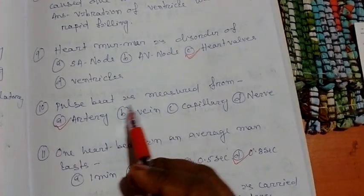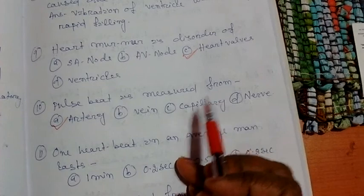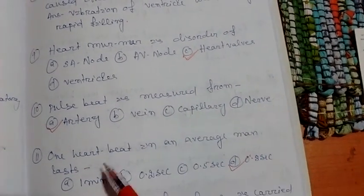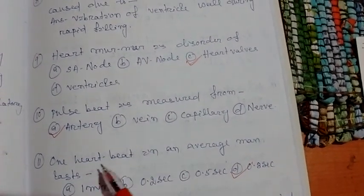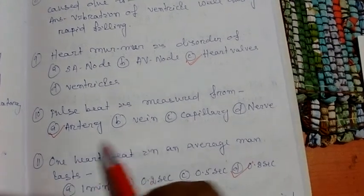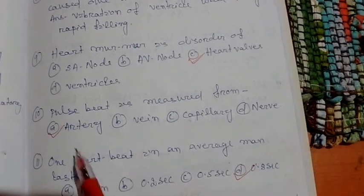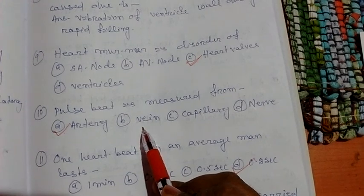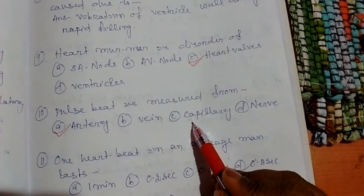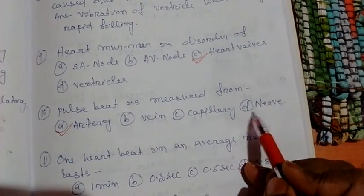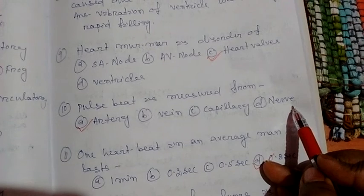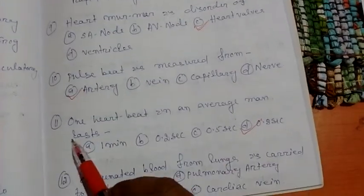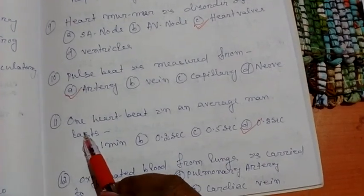Question number 10: pulse rate is measured from — there are four options: option A, artery; option B, vein; option C, capillary; option D, nerve. The correct option is artery.